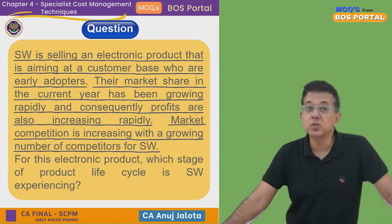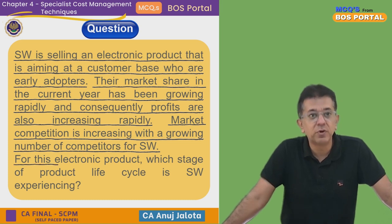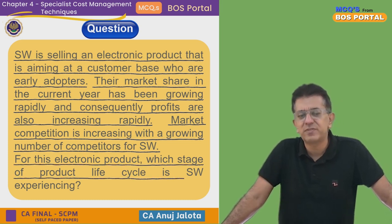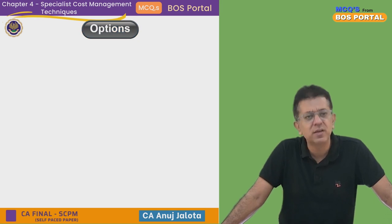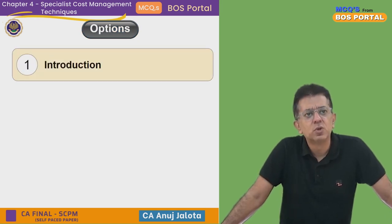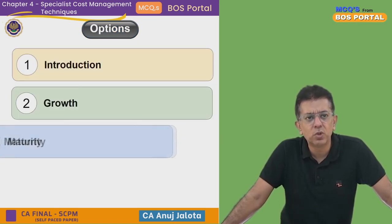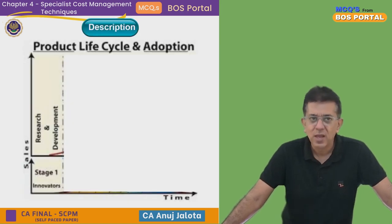The question asks: for this electronic product, which stage of the life cycle is SW experiencing? There are four stages — Introduction, Growth, Maturity, and Decline.